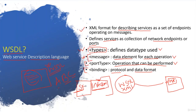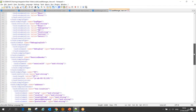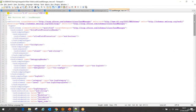WSDL is your service description language - everything is defined: how you are going to communicate, what operations are there, which protocol and data format your service uses, and to which address to connect. In the next session we'll see how to expose this WSDL file to the client, and what the client can do with the WSDL file once they receive it. Thank you, stay tuned for the next session.